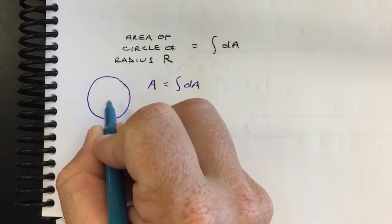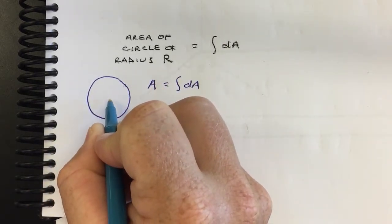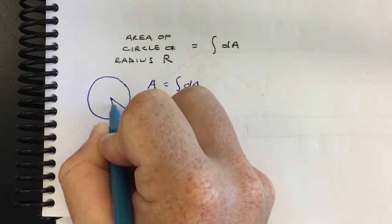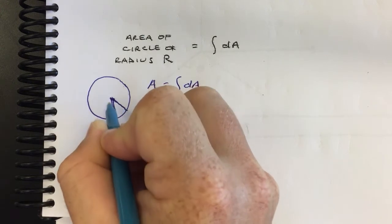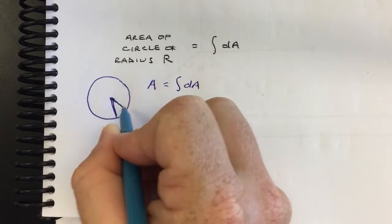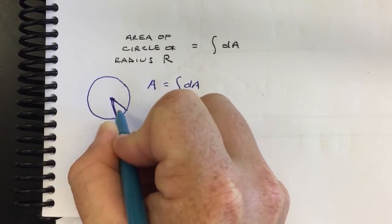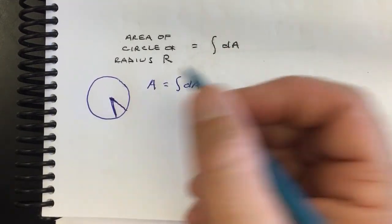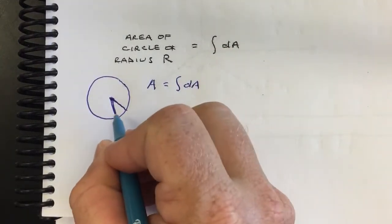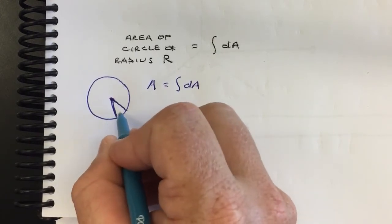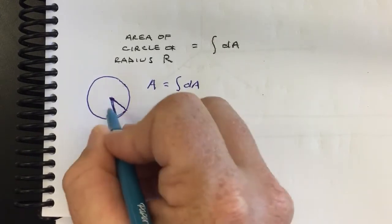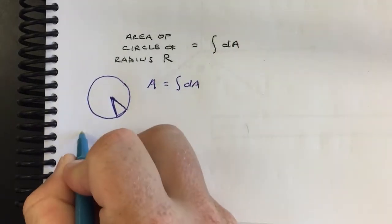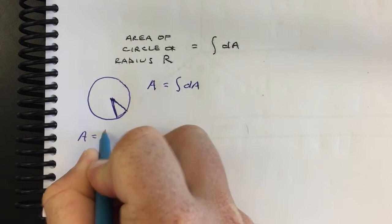One way of carving it up that they still cover in Calc BC is like pizza slices. We can carve it like this — I'm exaggerating how wide the wedge is; the idea is that it's an infinitesimally skinny wedge. So what we want to do is find the area of this thing. You can tell it's kind of like a triangle, especially if you make it nice and skinny.